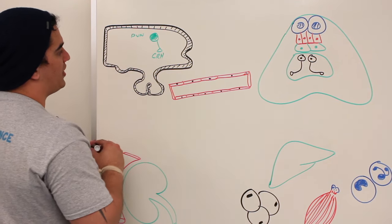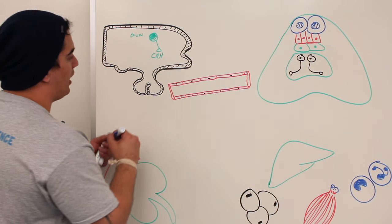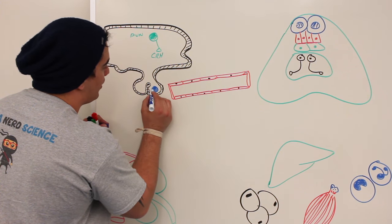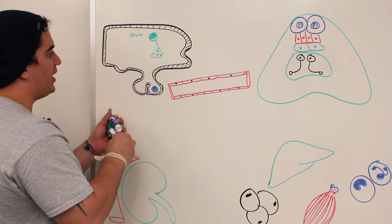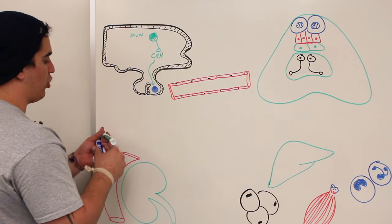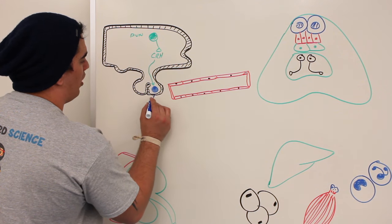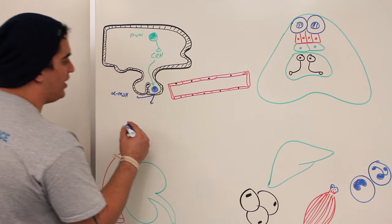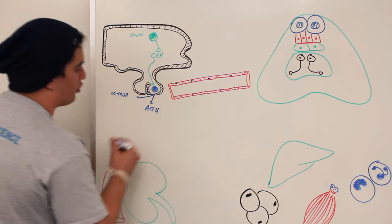The corticotropin-releasing hormone circulates down through the hypophysial portal system and stimulates specific cells in the anterior pituitary called corticotropes. The corticotrope then secretes two chemicals: alpha-MSH, which we covered in the detailed video, and the important one — adrenocorticotropic hormone.